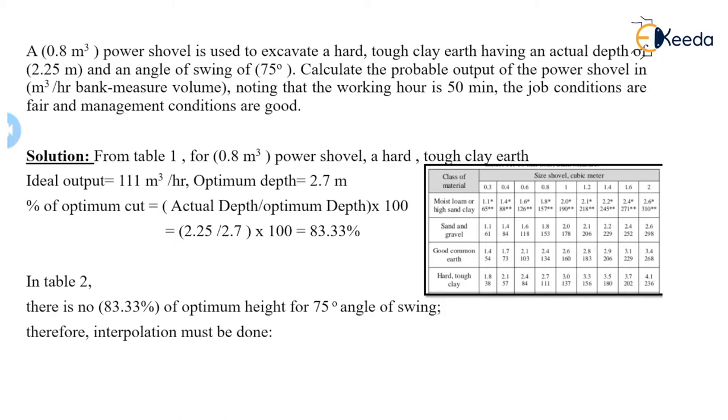Now we will see the solution. Same as the previous problem, from Table 1 we will find the ideal output and optimum depth. We know the capacity of the power shovel as 0.8. Here we can see the fourth one is 0.8, and as per given it is hard tough clay earth. The last one is the class of material hard tough clay, and it is given as 2.7 and 111. So 2.7 is the optimum depth in meters and 111 is the ideal output in meter cubes per hour.